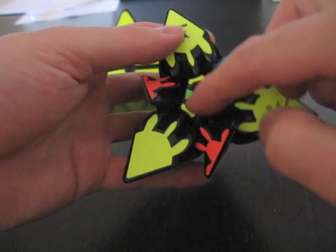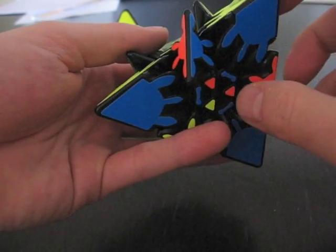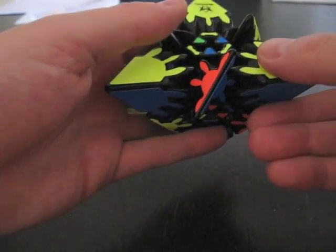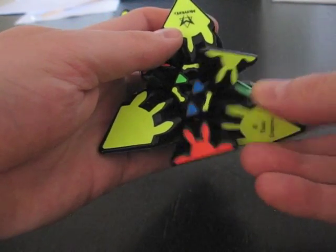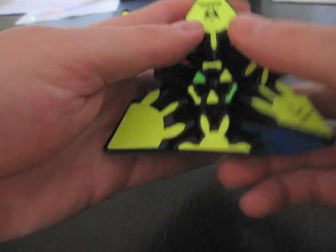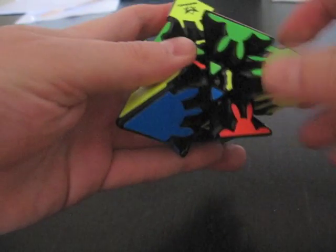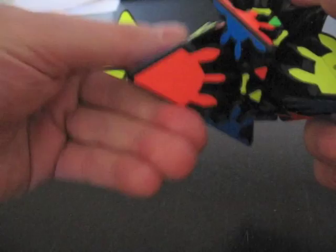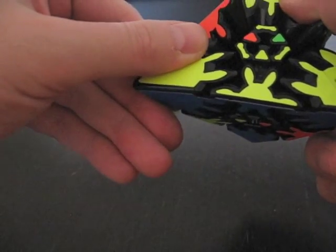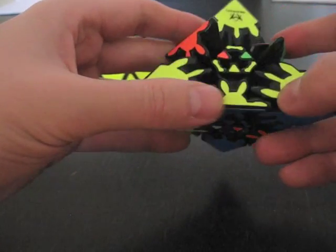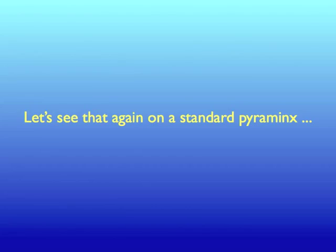As you can see, judging from corners or from internal stickers, this one should be blue-yellow. Blue-yellow is here. So we're going to bring it down, down, down, up, and up. And our corner is in place and as you can see, it's correct.